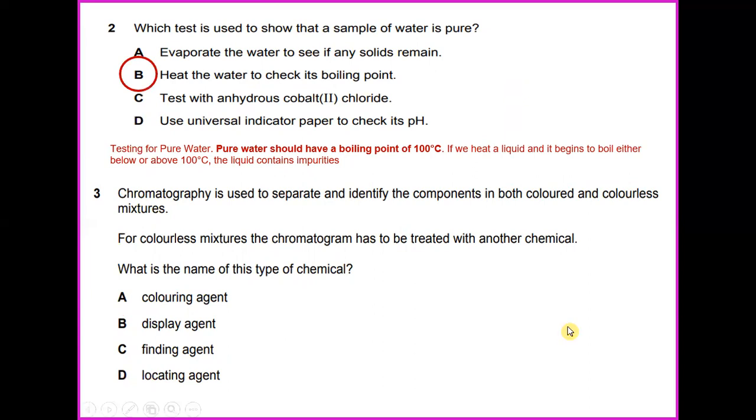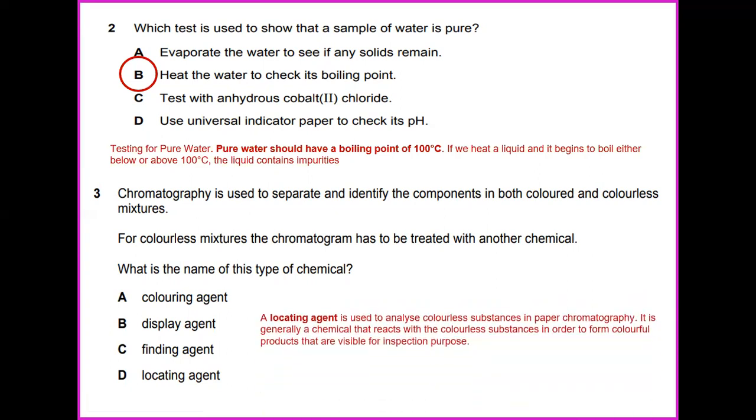Number 3. Chromatography is used to separate and identify the components in both colored and colorless mixtures. For colorless mixtures, the chromatogram has to be treated with another chemical. What is the name of this type of chemical? A locating agent is used to analyze colorless substances in paper chromatography. It is generally a chemical that reacts with the colorless substances in order to form colorful products that are visible for inspection purposes. So the answer for number 3 would be locating agent.